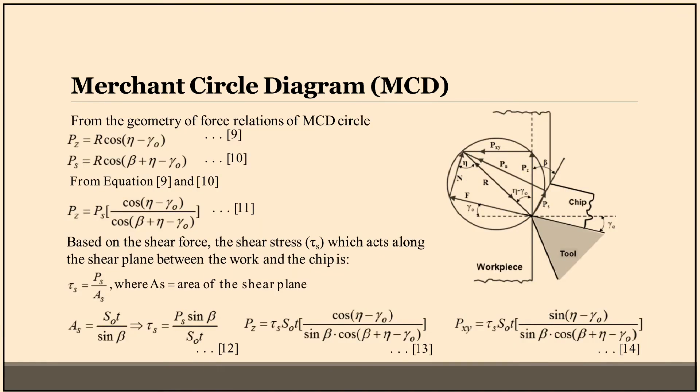Merchant Circle Diagram or MCD. There is a picture and from the geometry of force relations of MCD circle, we find three different equations. First, equation nine: Pz is equal to R cos eta minus gamma naught. Equation ten: Ps is equal to R cos beta plus eta minus gamma naught. From equations nine and ten, we can write Pz is equal to Ps multiply cos eta minus gamma naught divided by cos beta plus eta minus gamma naught, equation eleven.